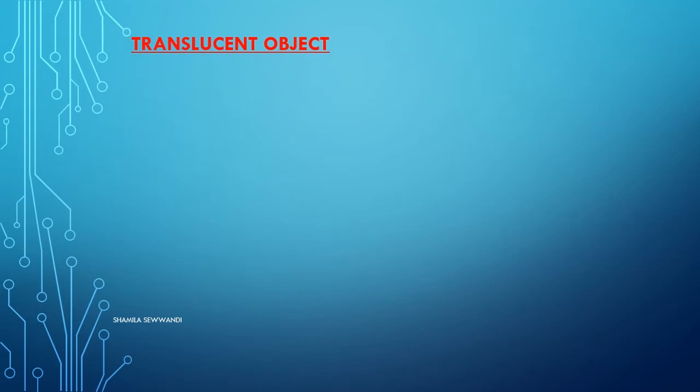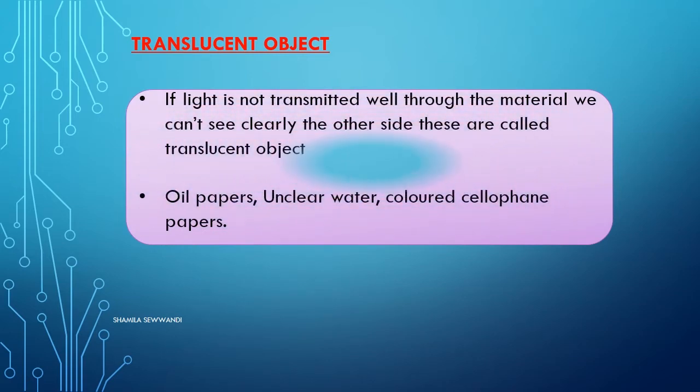Translucent objects: if light is not transmitted well through the material, we cannot see clearly the other side. They are called translucent objects.